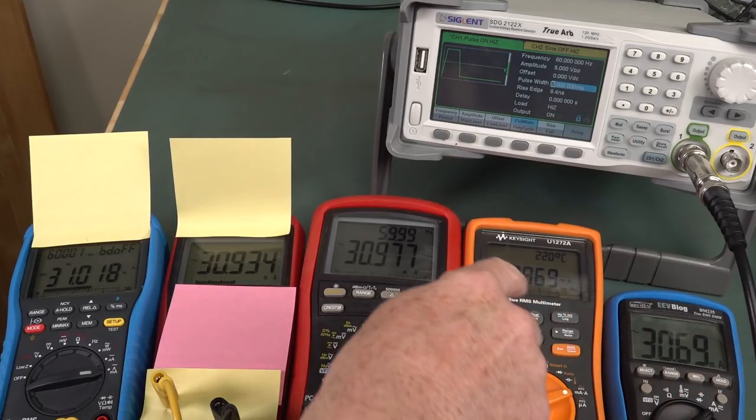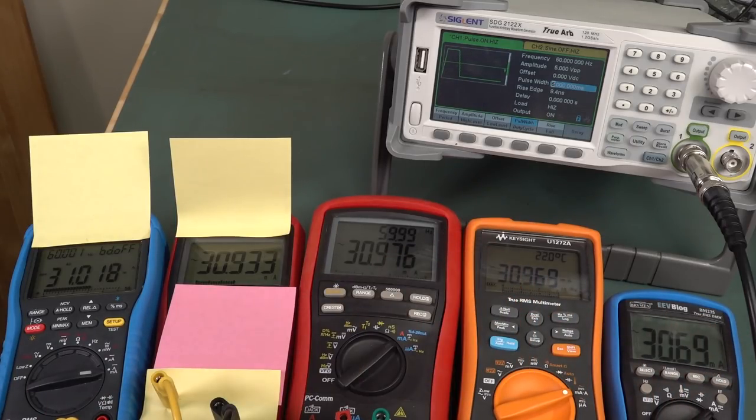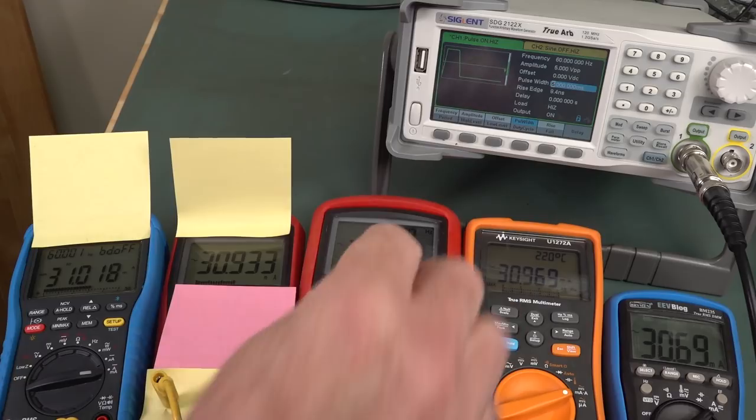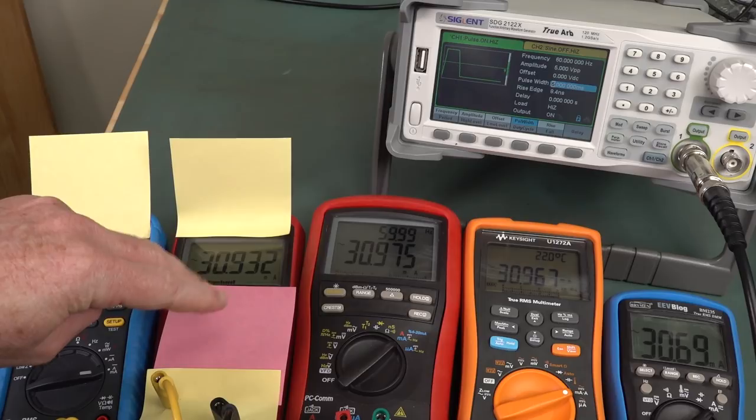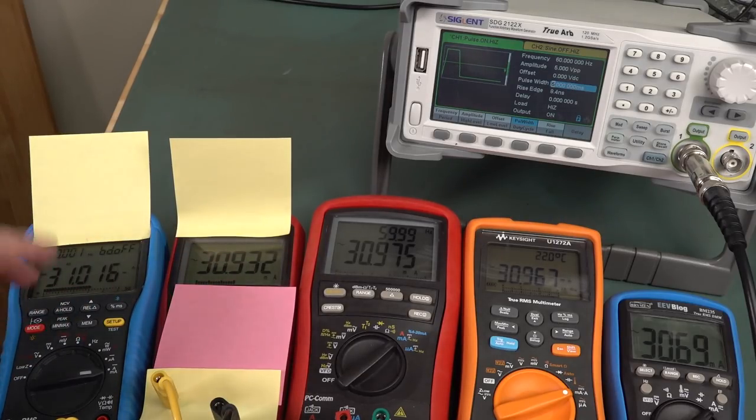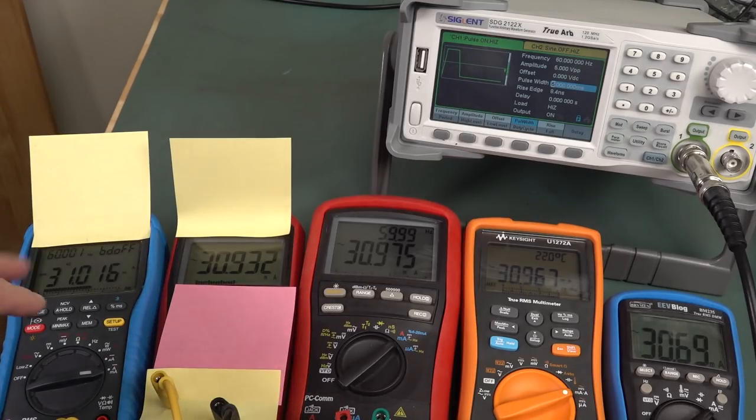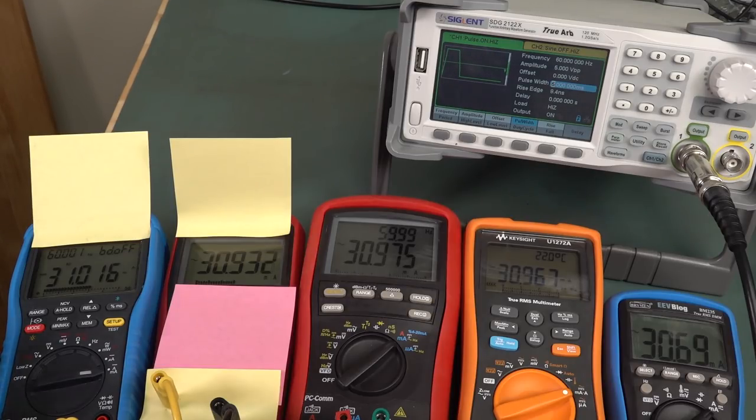We've got the BM235, the Keysight U1272A, the BM869, the new $150 class meter which I've ordered, and this mystery meter over here as well, which actually performs in this particular test the same as the 121. I just didn't want to put too many meters in series here.